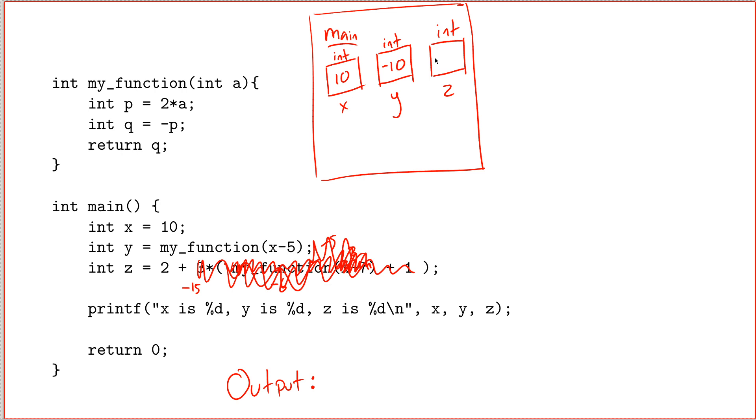So over here in main in my diagram, z has the value negative 13. And then I get down to this print statement, and the output is x is... And notice that there were a lot of variables flying around in my program, but now that I'm at the end, it's pretty obvious what x is. In this scope, x is 10, y is negative 10, and z is negative 13.